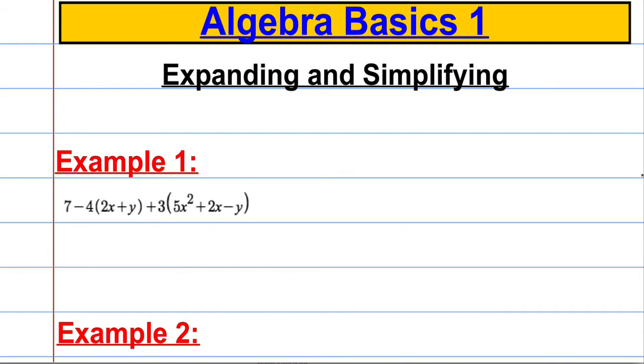Let's have a look at this one. We're going to do some expanding and simplifying, just refresh our memory here. If I had a problem such as this, I need to expand the brackets and then collect like terms together. This 7 is on its own, so I'm going to write that down. This minus 4 here is outside the brackets, which means I need to expand it by multiplying. So minus 4 times 2x gives minus 8x, and minus 4 times y gives minus 4y.